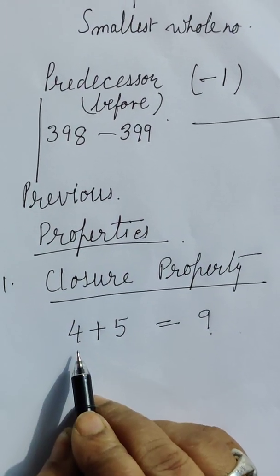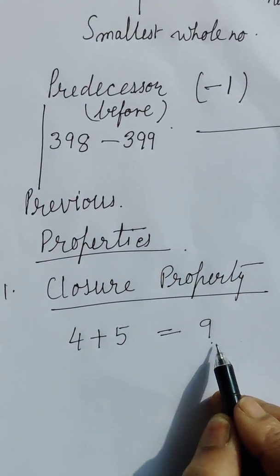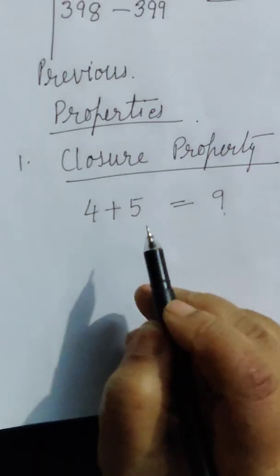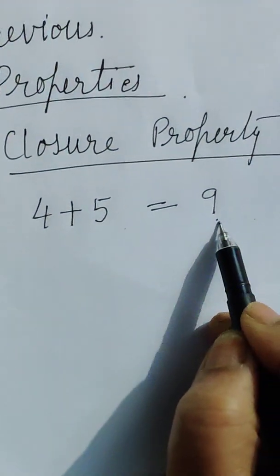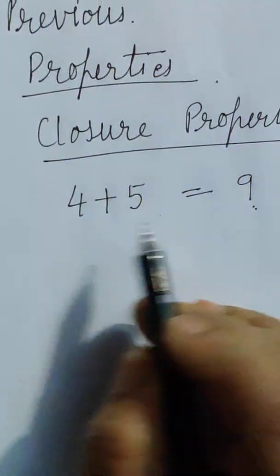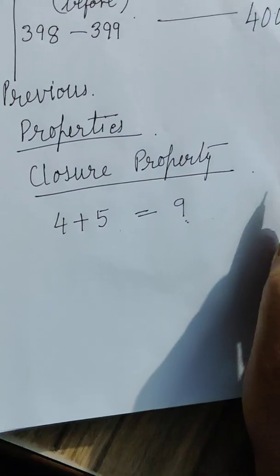That means when 2 whole numbers, 4 is also a whole number, 5 is also a whole number, and 9 is also a whole number. When 2 whole numbers are added, the answer is also a whole number. So closure property satisfies in addition.